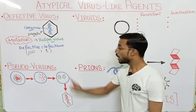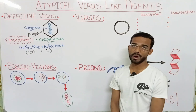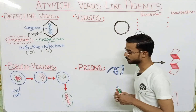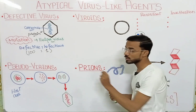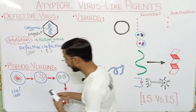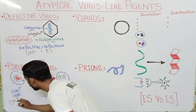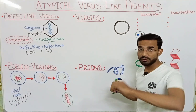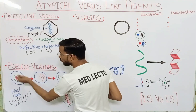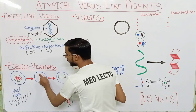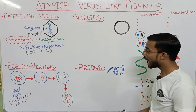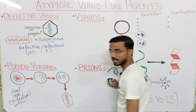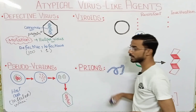Next is the pseudo virions. Pseudo means false — they are not true viruses. If you see, this is the host cell, and this host cell is infected by viruses. In the infection of this host cell, the DNA or genetic material of the host cell will be fragmented. After that, you will see the formation of the capsid around the genetic material, and ultimately the formation of the pseudo virions.